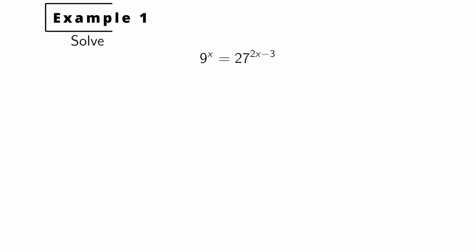Example one: we have 9 to the X equals 27 to the 2X minus 3 power. When you see this, the key is recognizing that both 9 and 27 are powers of 3. Nine is 3 squared, so this becomes 3 squared to the X power. And 27 is 3 cubed, so it becomes 3 cubed to the 2X minus 3. Applying properties of exponents, this becomes 3 to the 2X, and the right side becomes 3 to the 3 times (2X minus 3) power.